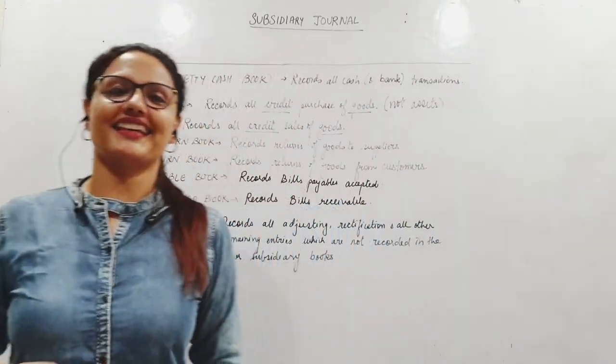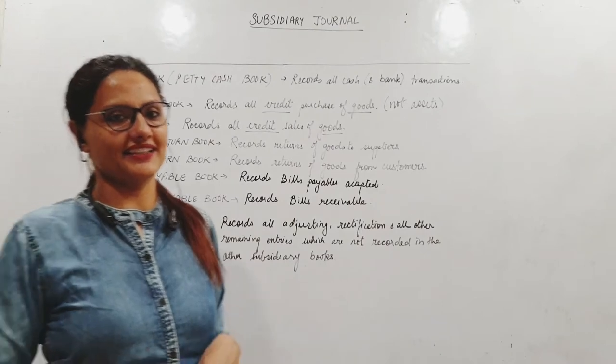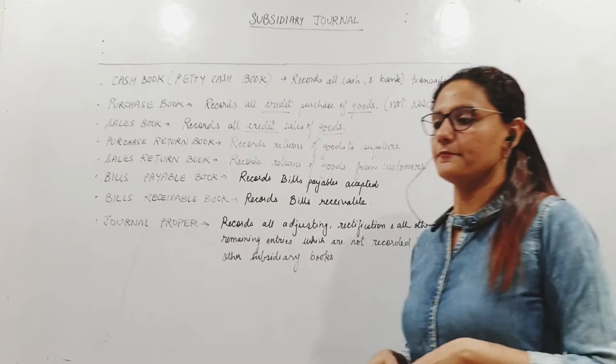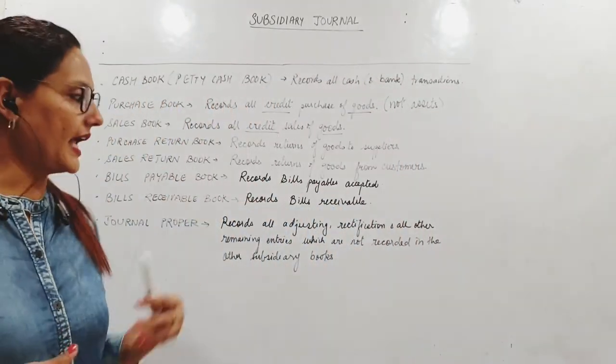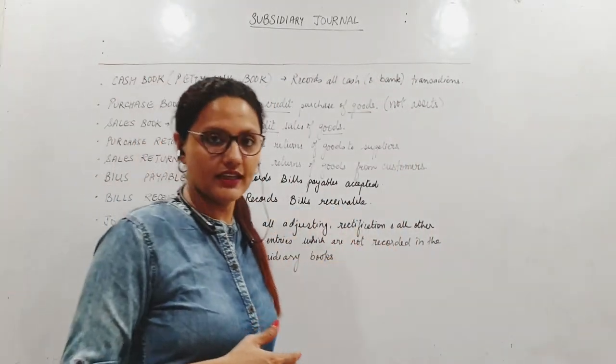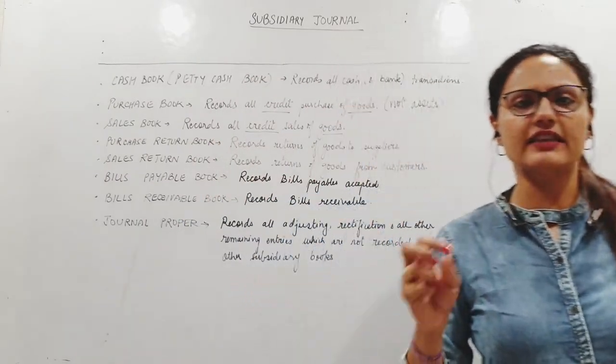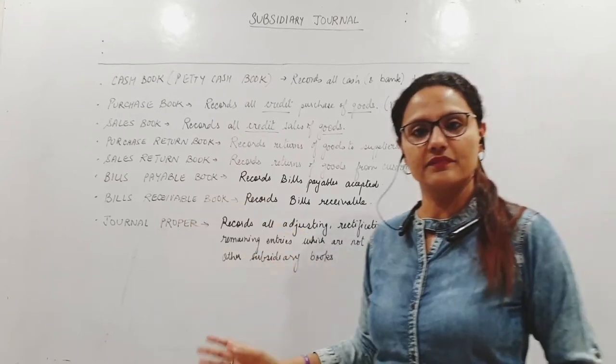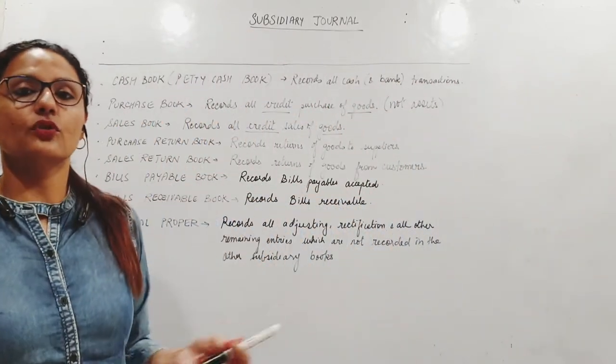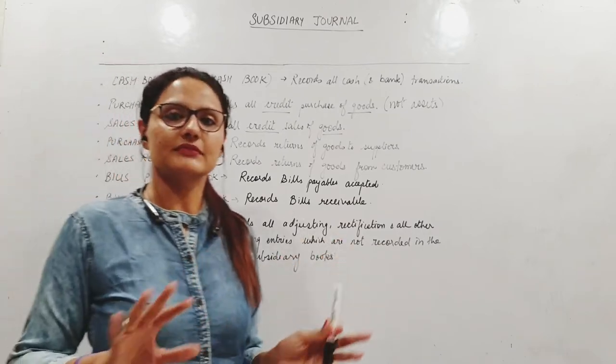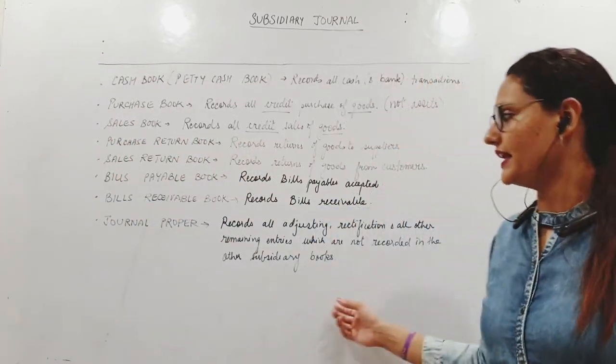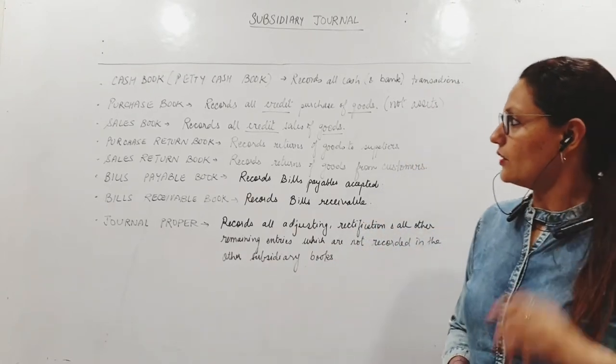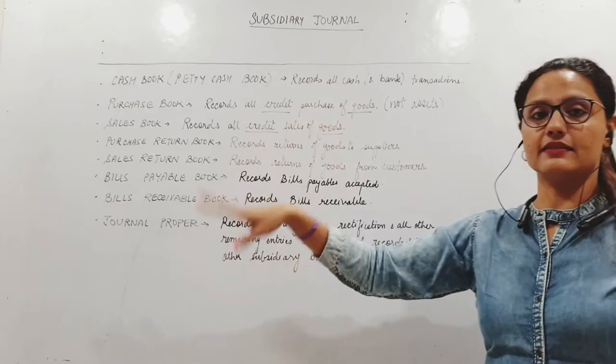Even after having so many books, like credit sale of asset, credit purchase of asset, there are certain opening entries, certain adjusting entries, rectifying entries. There's an error - where do you rectify it? I have to record it here. Bad debts written off. Those entries, the residual entries, all those will find a place in another book which is called journal proper.